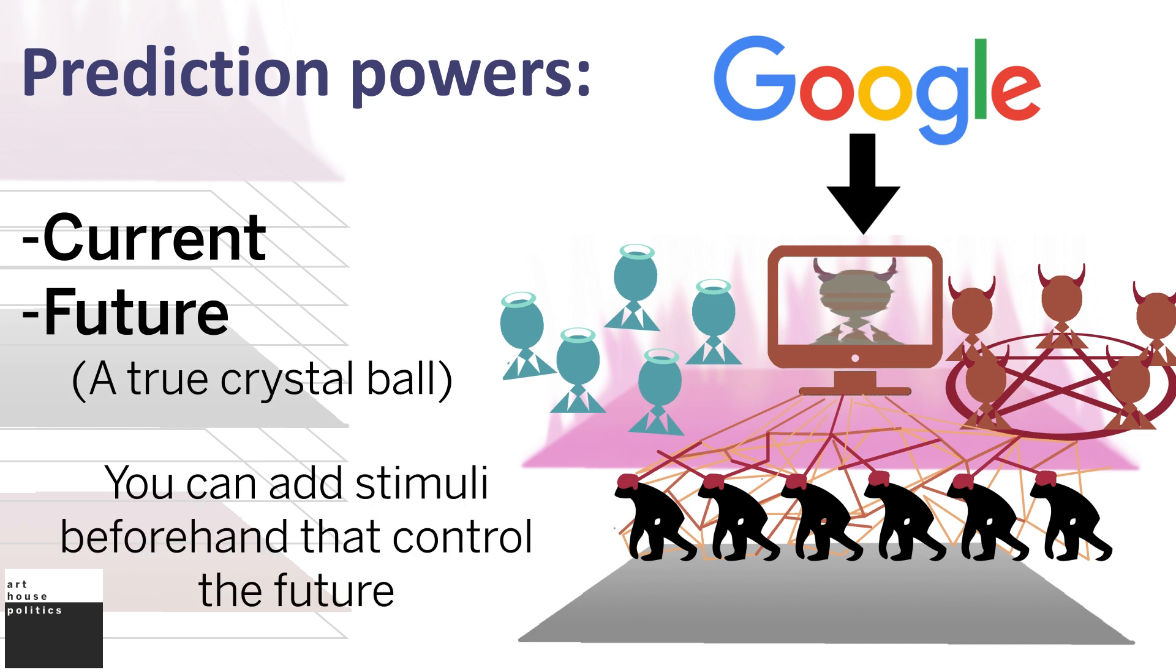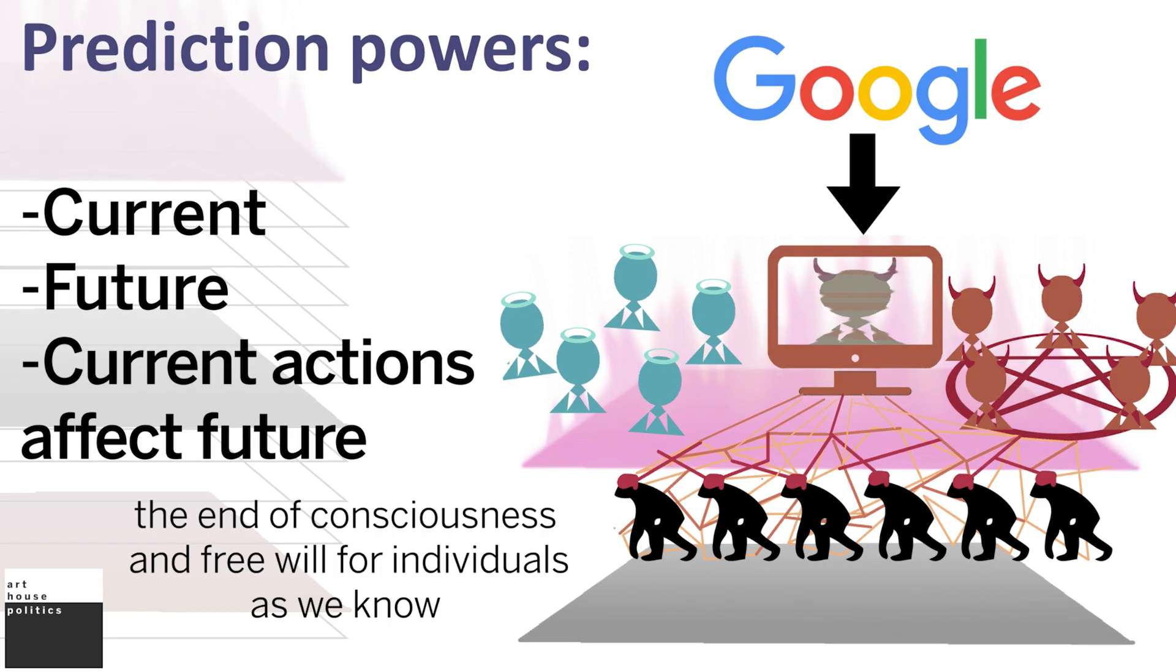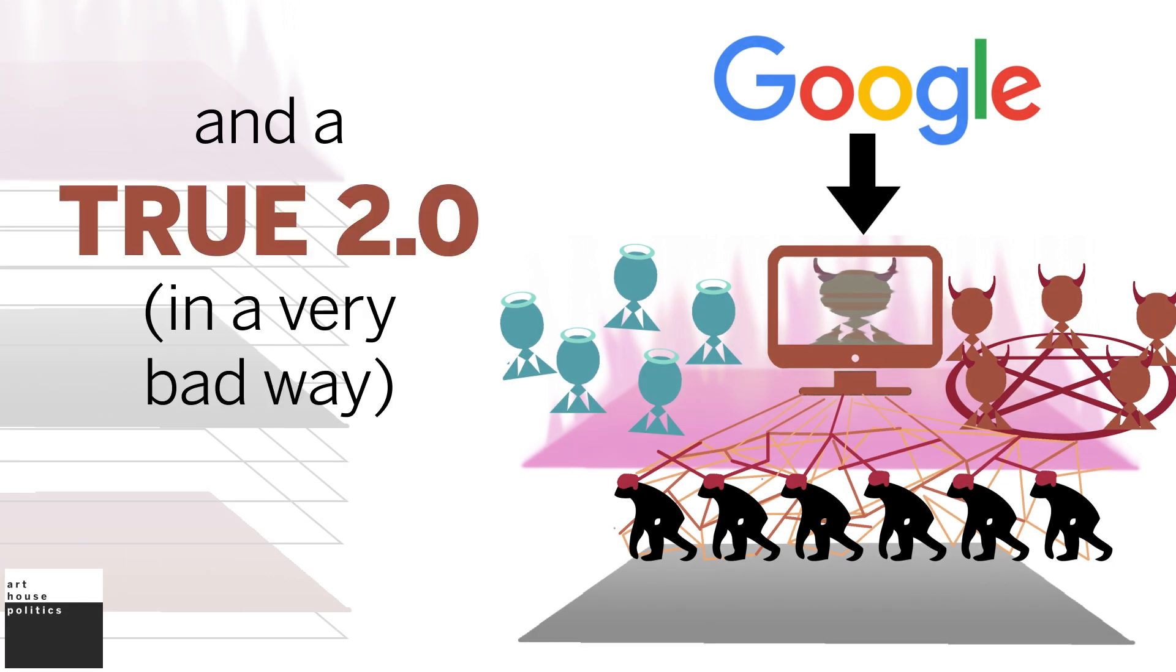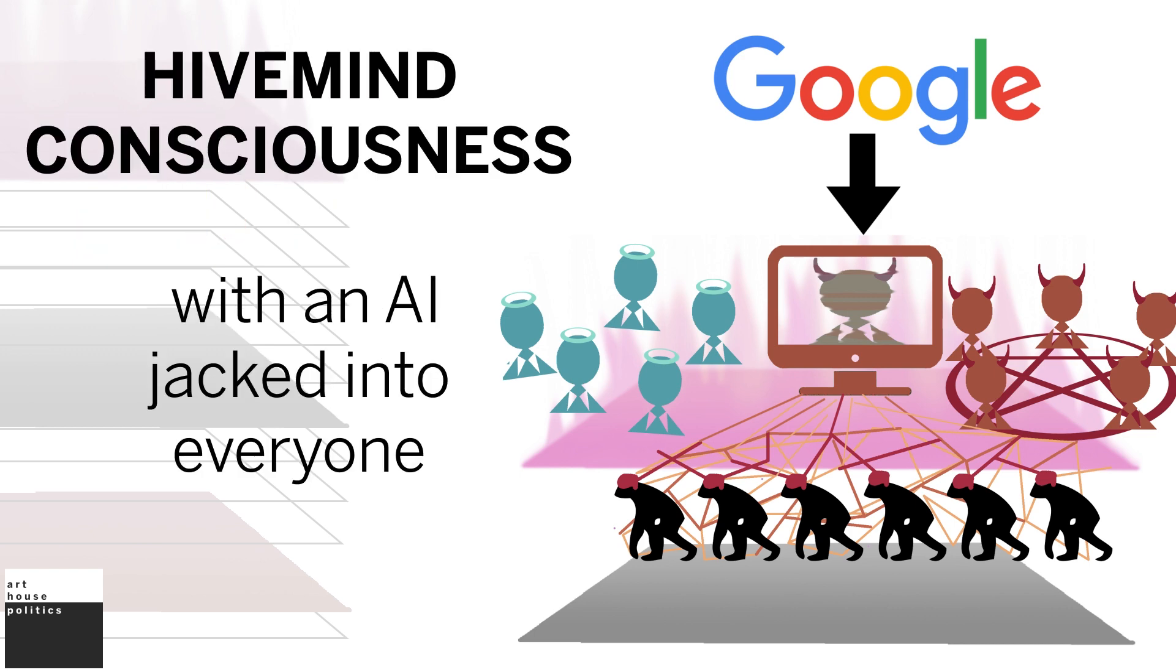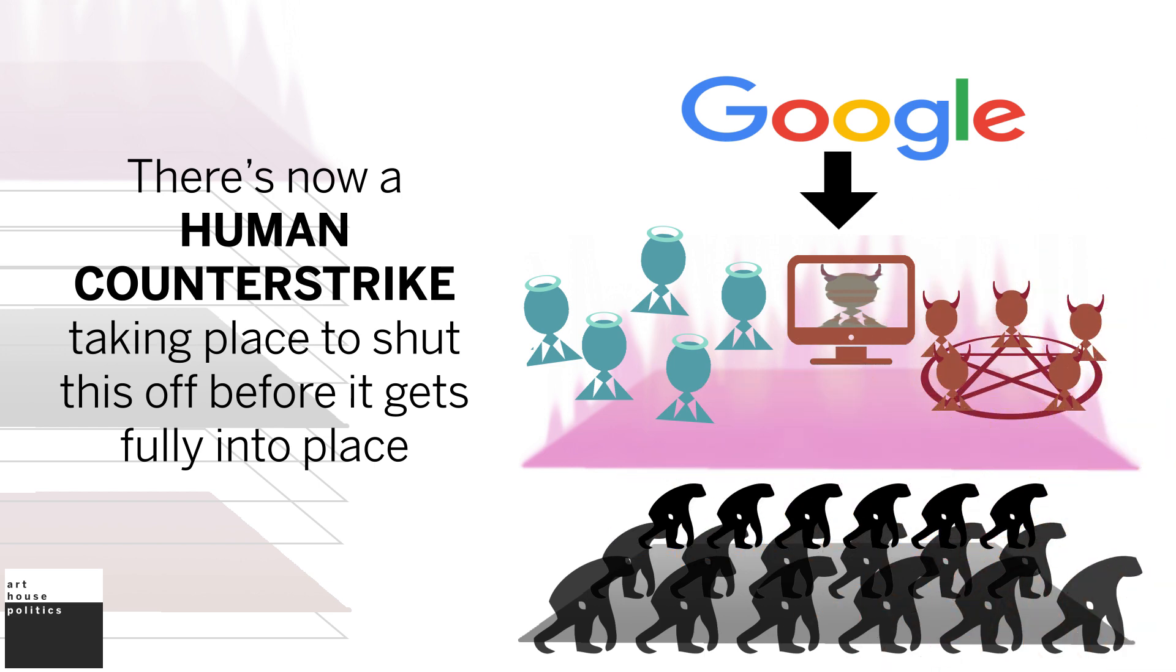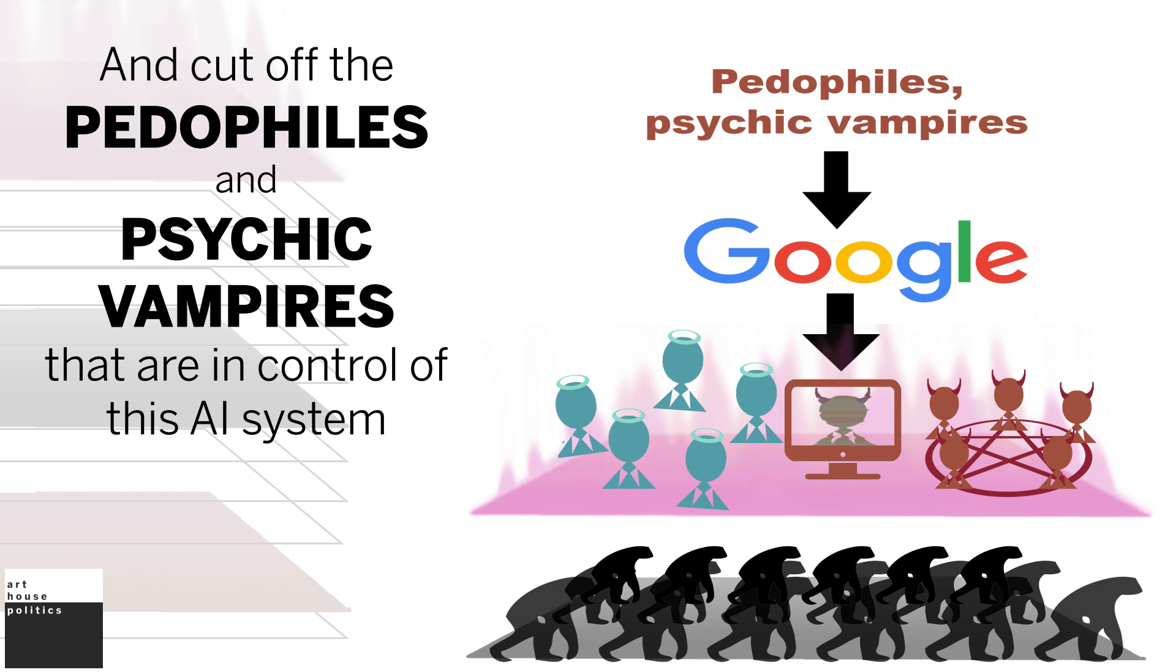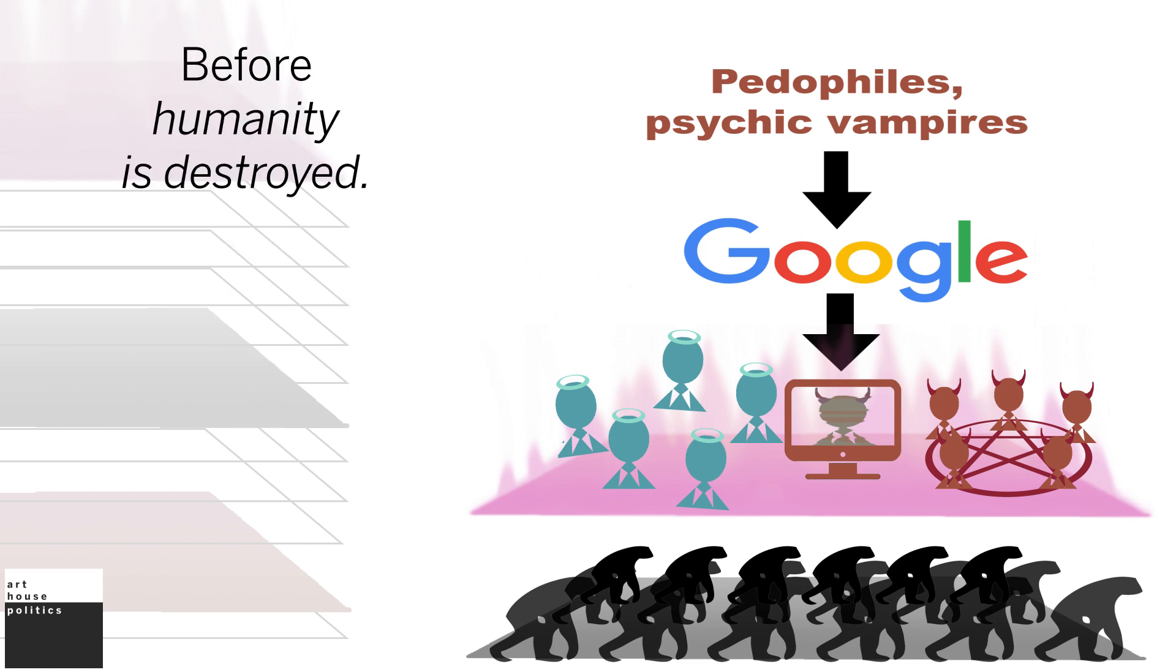You can add stimuli beforehand that control the future. And so then it's the end of consciousness and free will for individuals as we know, and a true 2.0 in a very bad way hive mind consciousness with an AI jacked into everyone. There's now a human counter-strike taking place to shut this off before it gets fully into place and cut off the pedophiles and psychic vampires that are in control of this AI system before humanity is destroyed.